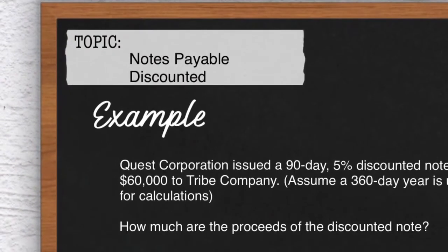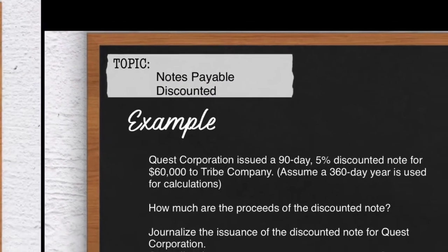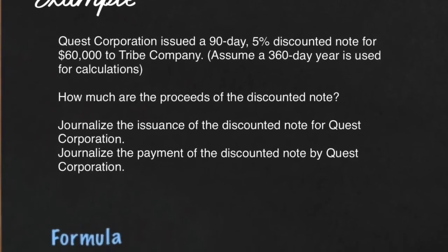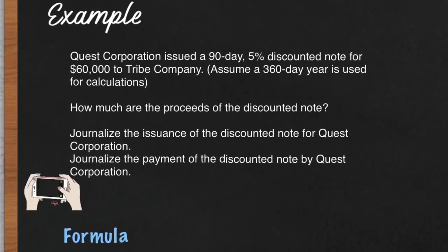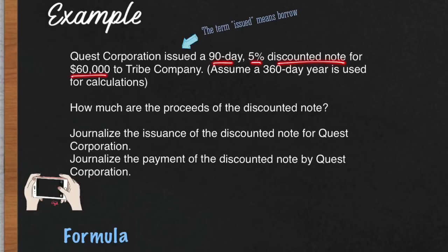Let's go over Notes Payable — more specifically, a discounted note, because there is a difference between the two. Our example is here; feel free to screen capture or take a picture of it. Quest Corporation issued a 90-day 5% discounted note for $60,000.